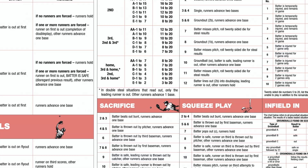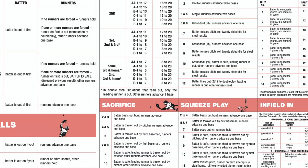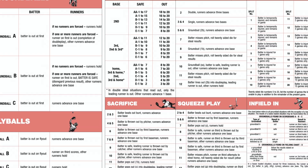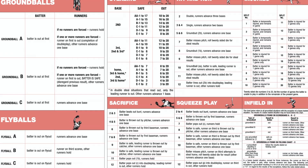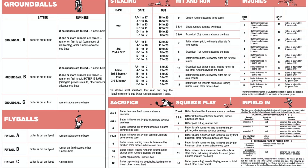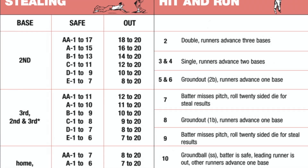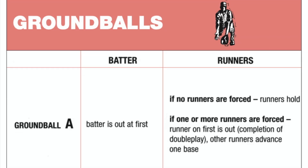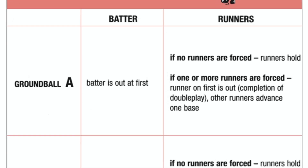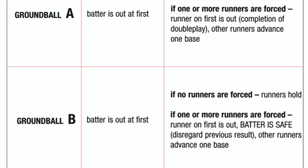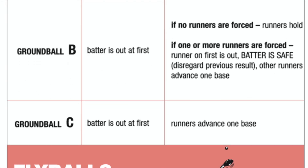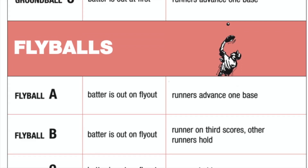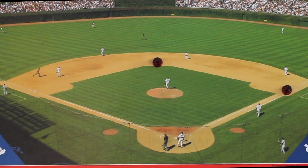For any strategy decisions you make, such as bunting, stealing, and hit and runs, consult the basic strategy chart for the outcome. Use the same chart for what to do on each specific type of ground ball or fly ball result.